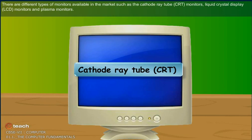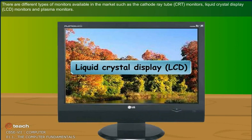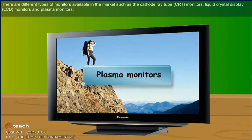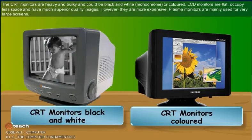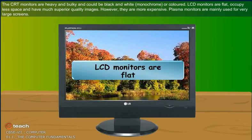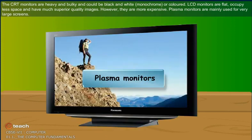There are different types of monitors available in the market such as the Cathode Ray Tube (CRT) monitors, Liquid Crystal Display (LCD) monitors, and plasma monitors. CRT monitors are heavy and bulky and could be black and white, monochrome or colored. LCD monitors are flat, occupy less space and have much superior quality images; however, they are more expensive. Plasma monitors are mainly used for very large screens.